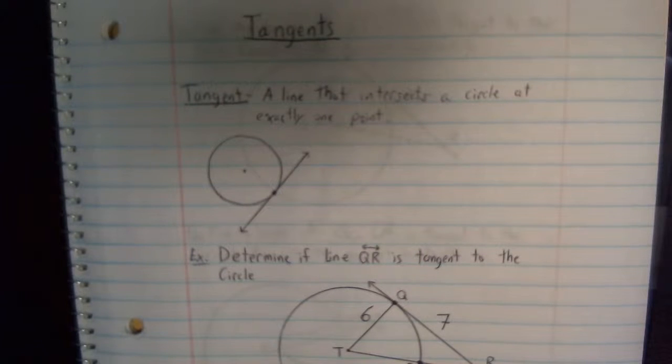A way that I like to think of it is kind of like a wheel on a road. A wheel only touches the road at exactly one point, so the road would be tangent to the wheel itself.